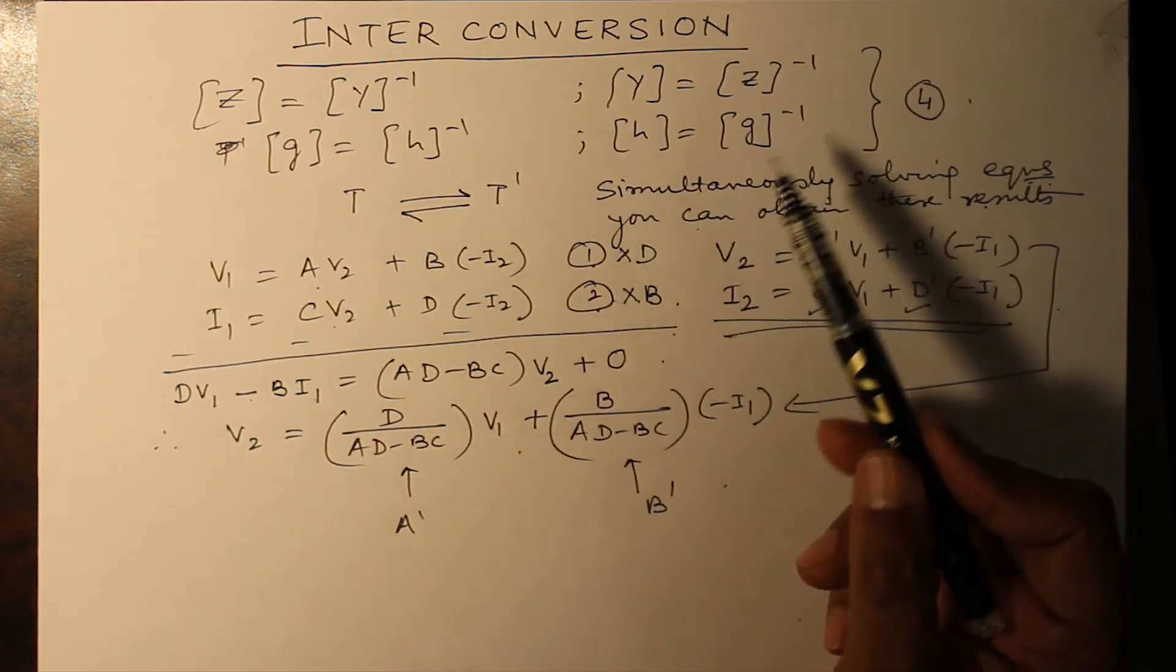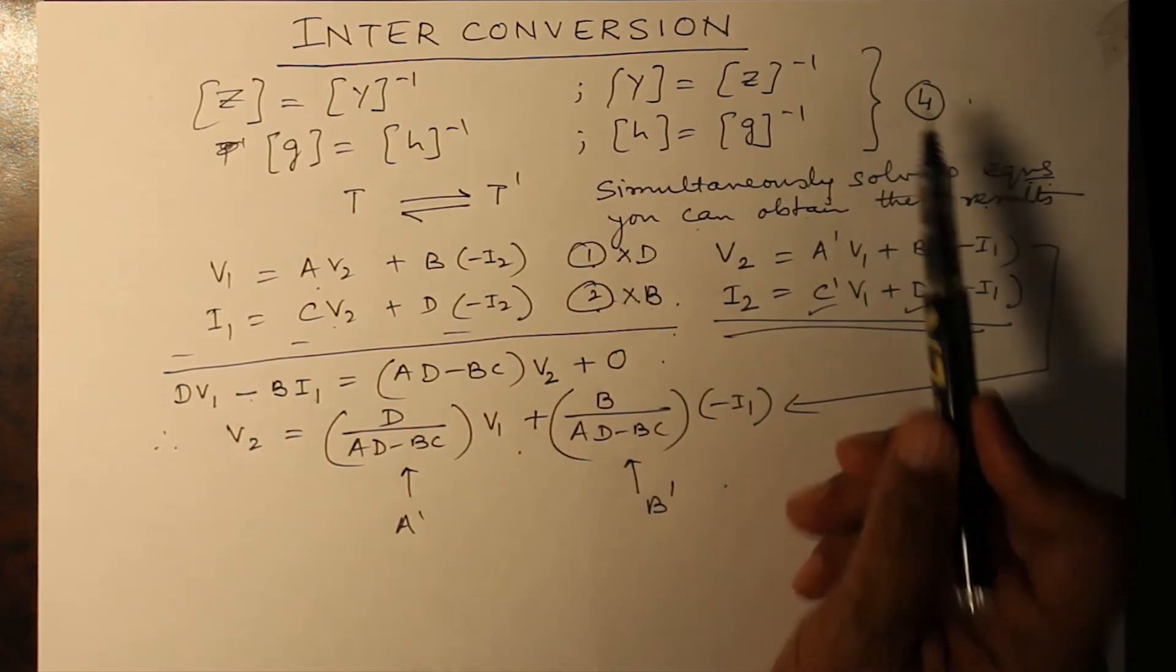So six of the conversions can be done very easily. These are the four conversions. Now I will tell you what is the formula for it.